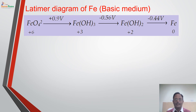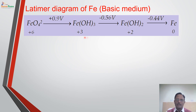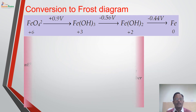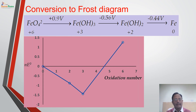In basic medium, there is a fundamental difference — the reduction potentials change. The reduction potential from +6 to +3 is negative, and from +3 to +2 is also negative, while from +2 to 0 is positive. This means the most stable oxidation state in basic medium is +3 and not +2. So in acidic medium +2 is the most stable oxidation state, while in basic medium +3 is the most stable. This is confirmed by the Frost diagram where +3 has the minimum N × E0 value.